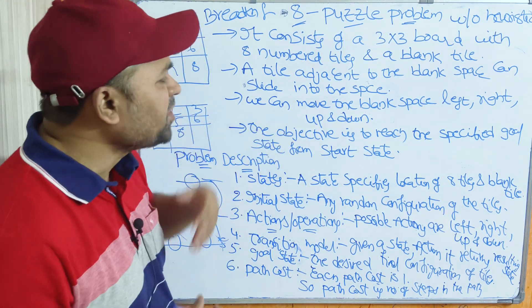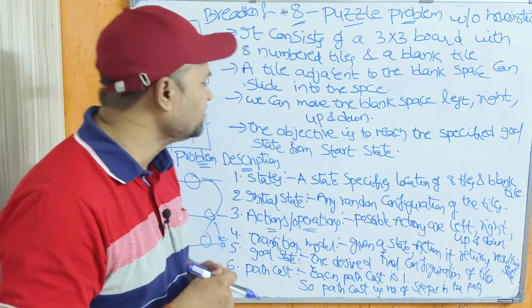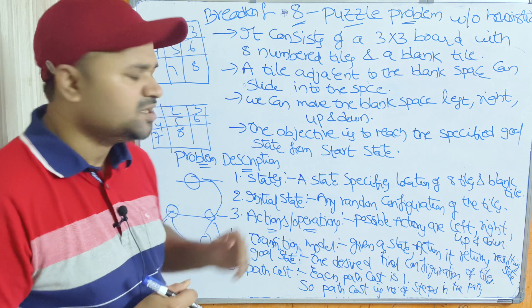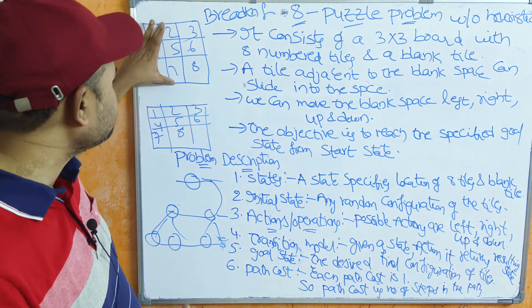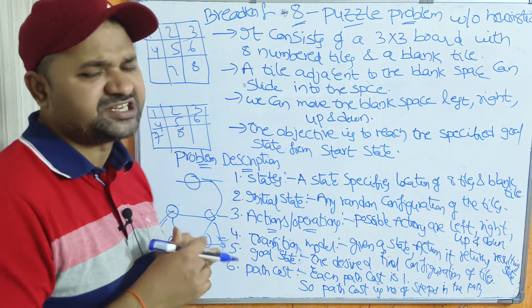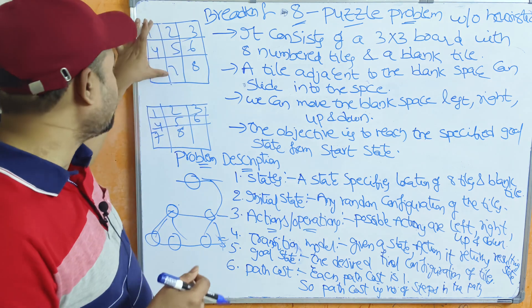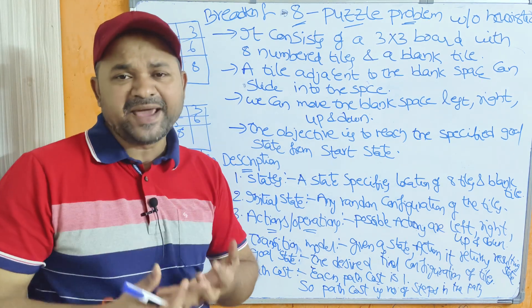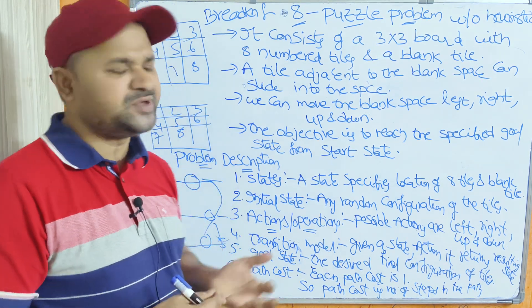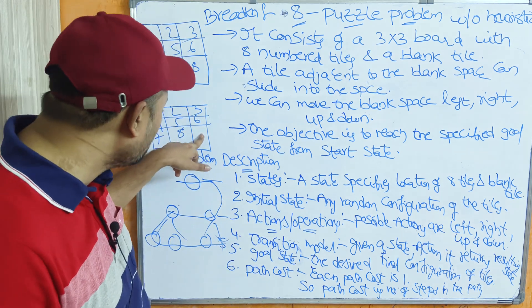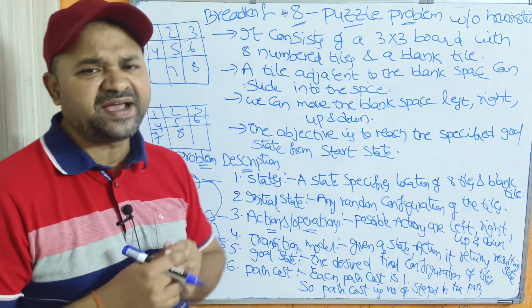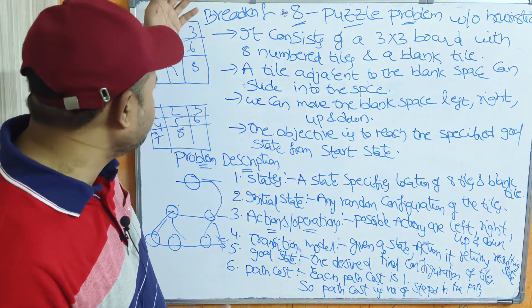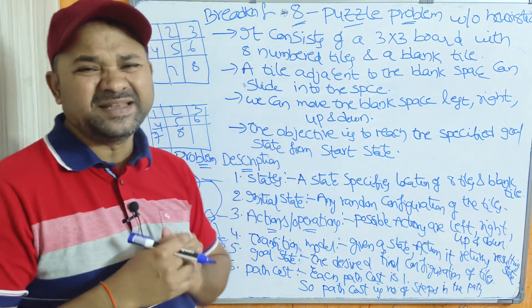The major objective is to reach the specified goal state from the starting state. This is the initial state and this is the final state. Our major objective is to produce the goal state from the specified initial state. For that purpose, let us see the problem description.